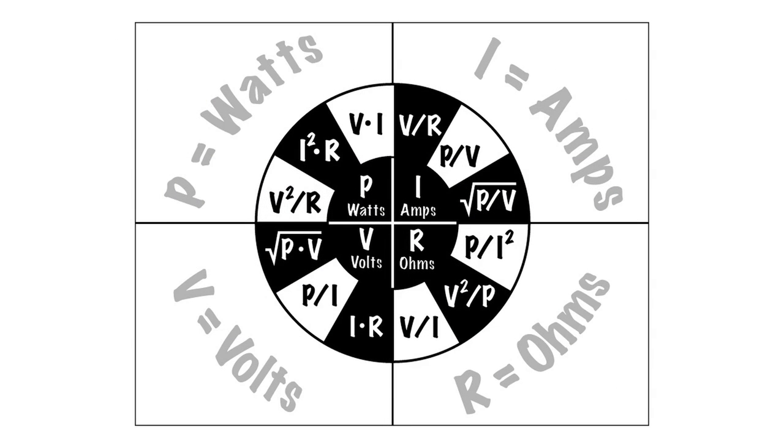This wheel describes the relationships where the inner ring is the third unknown value and the outer ring is all of your known variables. For instance, in the bottom left hand corner you're solving for voltage. Applying the outer ring you can see that voltage is equal to current times resistance but voltage is also equal to power divided by current. Understanding these laws and reading this wheel is of the utmost importance when you attempt to calculate the requirements for your power supply.